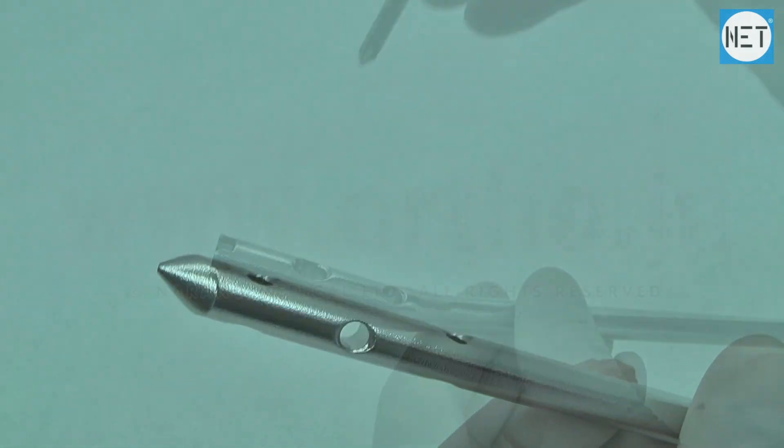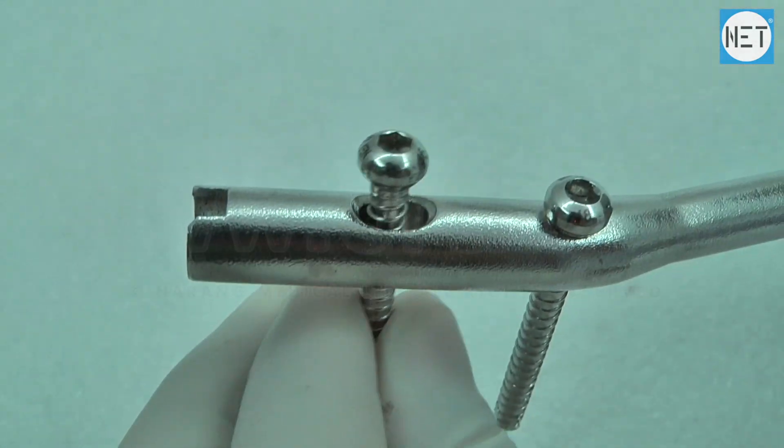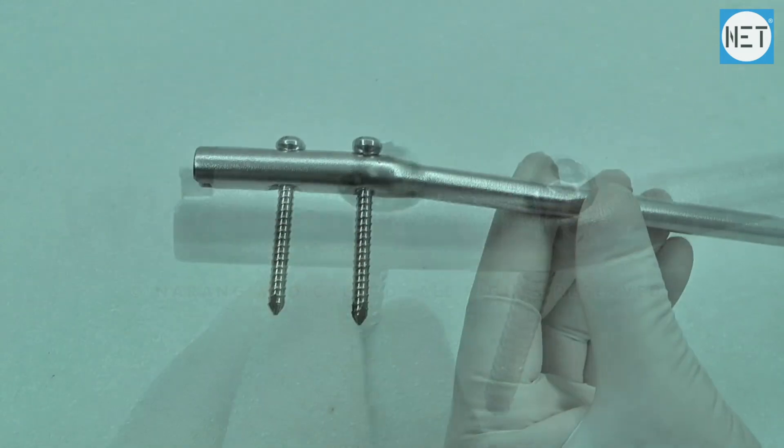First proximal hole from the top is dynamic and is directed lateral to medial. Second hole from the top is round and is also directed lateral to medial.